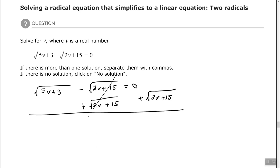That will cancel those two out, leaving me with the square root of 5v plus 3 equals the square root of 2v plus 15.